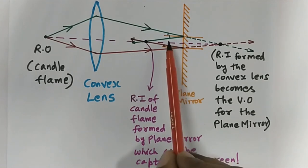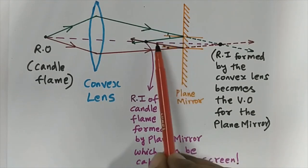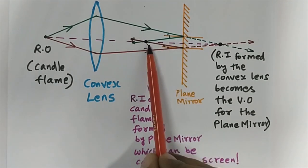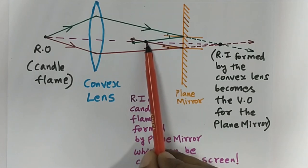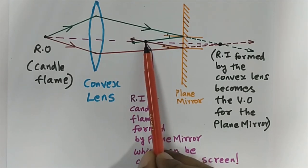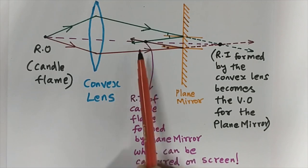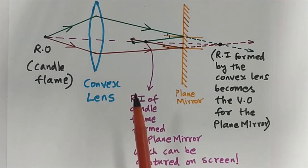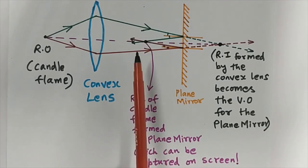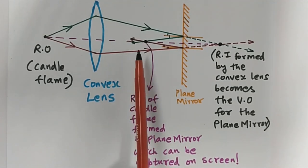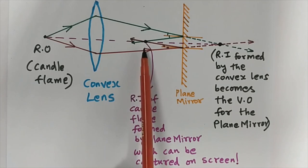Since the light rays converge after hitting the mirror, they meet in space in a real manner and form a real image. So if I place a screen at this location, I am able to capture this real image on the screen, as you saw in the demonstration.